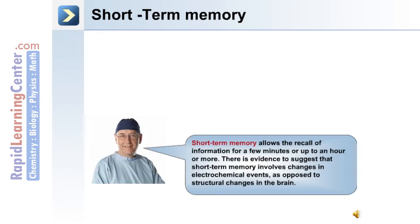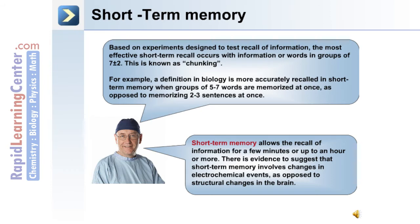Short-term memory allows recall of information for a few minutes or up to an hour or more. Evidence suggests that short-term memory involves changes in electrochemical events as opposed to structural changes in the brain. Based on experiments designed to test recall, the most effective short-term recall occurs with information or words in groups of seven plus or minus two — this is known as chunking the information. For example, a definition of biology is more accurately recalled in short-term memory when groups of five to seven words are memorized at once, as opposed to memorizing two to three sentences at once.